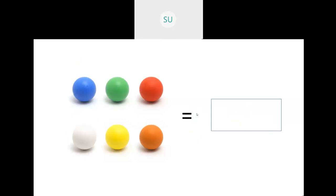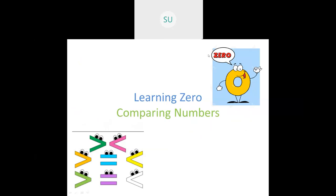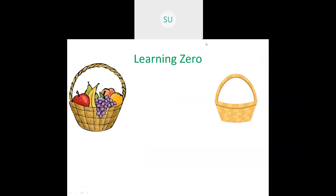So this was numbers from 1 to 9. Then we learned what is 0. After numbers from 1 to 9, we saw learning 0 and comparing numbers. Here, we have a basket of fruits. After you eat all the fruits, you have nothing left — there are 0 fruits in the basket. So 0 means nothing, and 0 is written like an egg or the letter O.